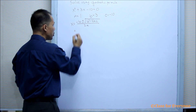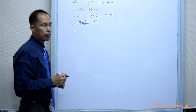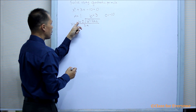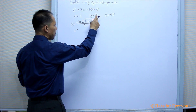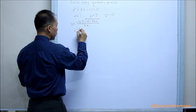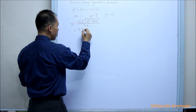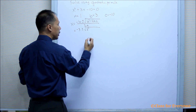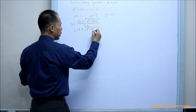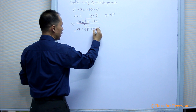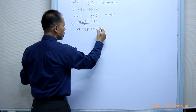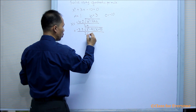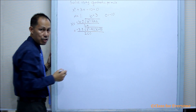By substitution for the values of a, b, and c, we get negative b plus or minus the square root of b squared minus 4 times a times c, all over 2 times a.